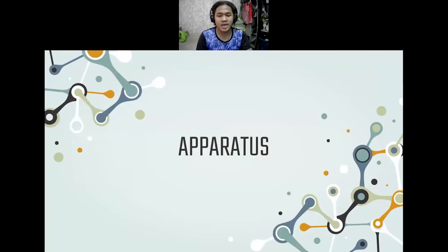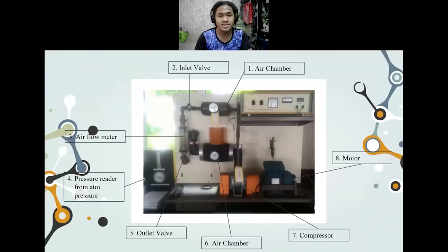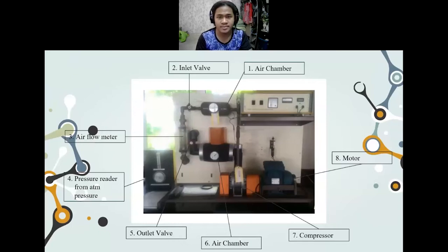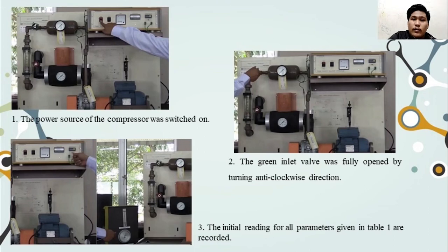Moving on to apparatus: the equipment used in this experiment are number one, air chamber; number two, inlet valve; number three, air flow meter; number four, pressure reader; number five, outlet valve; number six, air chamber (same as number one); and number seven, compressor.